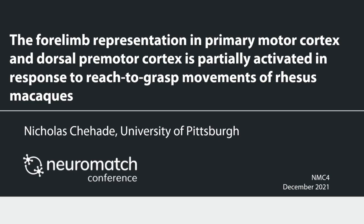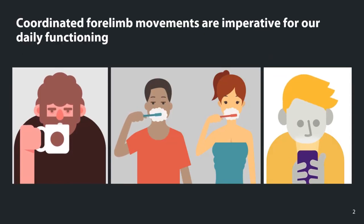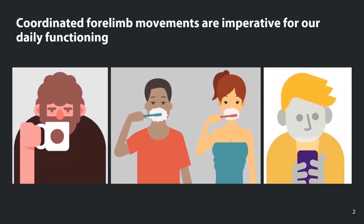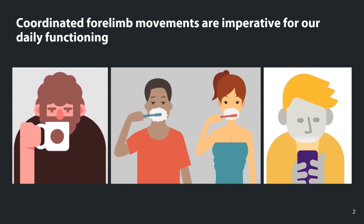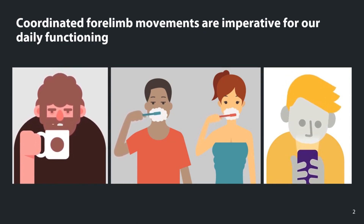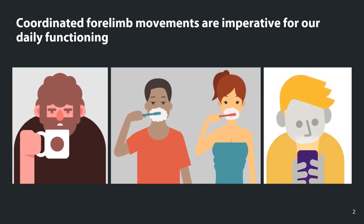Hello, my name is Nick Shahadi from the University of Pittsburgh, and today I'm going to present my research titled: The Forelimb Representation in Primary Motor Cortex and Dorsal Premotor Cortex is Partially Activated in Response to Reach-to-Grasp Movements of Rhesus Macaques. We perform a variety of coordinated forelimb movements in our day-to-day lives, such as grabbing for a cup of coffee, texting, or brushing our teeth, and the overarching goal of this project is to understand how the brain encodes coordinated forelimb movements such as these.